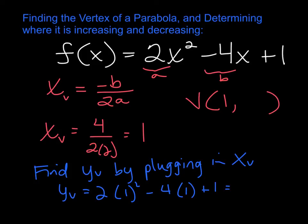So when I do this out, well 1 squared is 1 times 2, so I get a 2 there, minus 4 plus 1, so I get a negative 1 out. When I plug in x is 1, I get a negative 1 out, so that is the y part of my vertex. So my vertex is 1 negative 1.